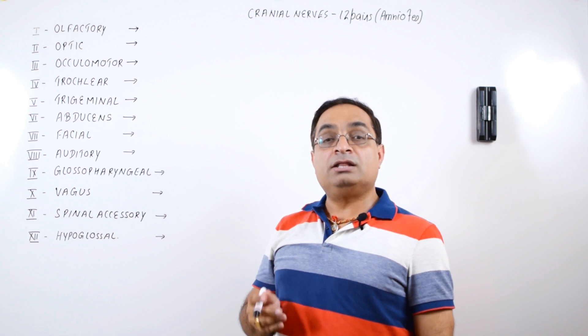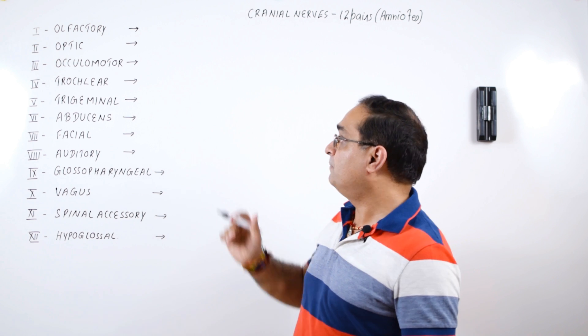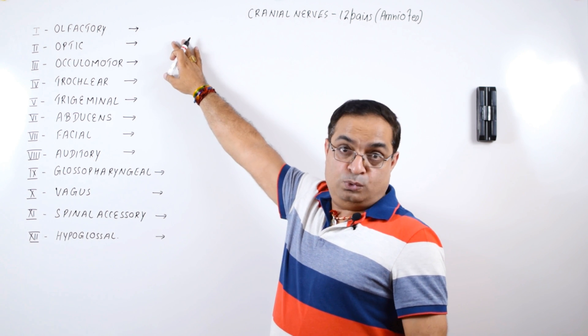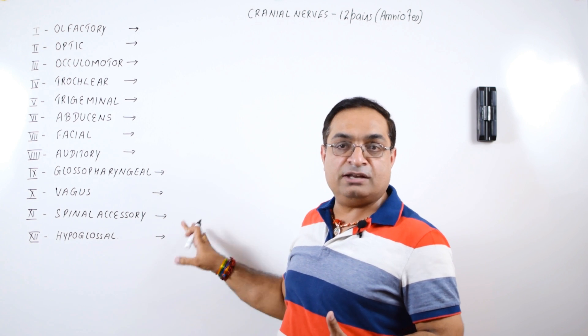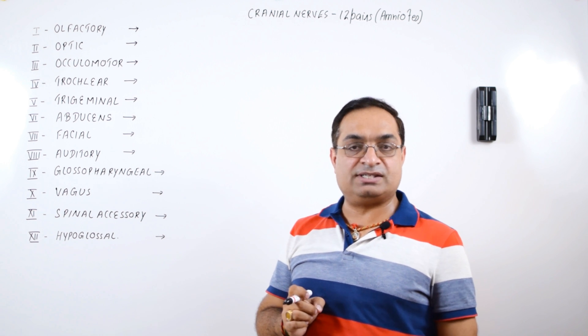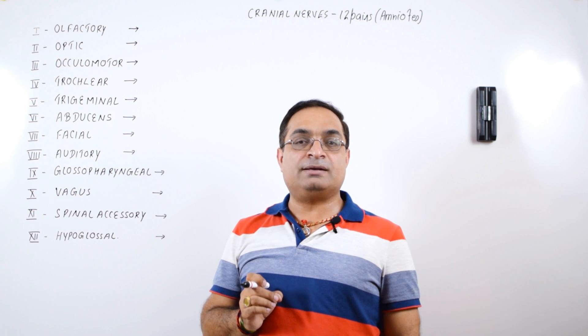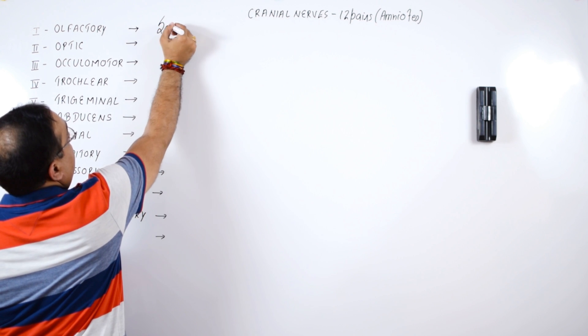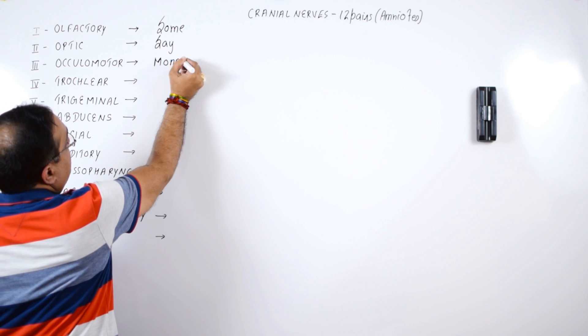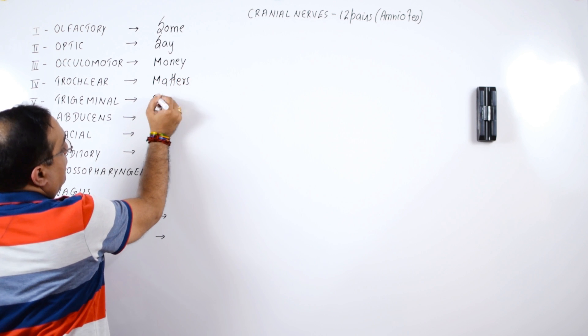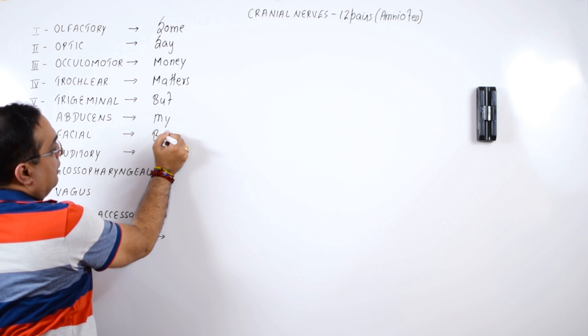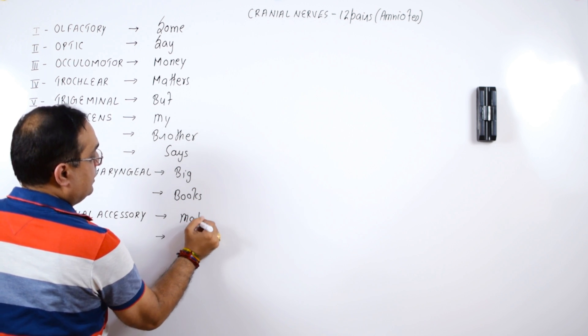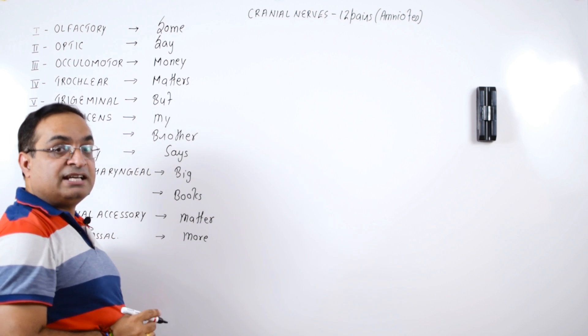We'll discuss which cranial nerve is sensory, which cranial nerve is motor, and which cranial nerve is mixed. As you can see, olfactory is related to sense of smell, the olfactory cranial nerve is a sensory cranial nerve. Optic is related to sense of vision, so this is another sensory nerve. I'll give you a clue that how to remember which cranial nerve is sensory and which cranial nerve is motor. Just remember one sentence: Some Say Money Matters But My Brother Says Big Books Matter More.